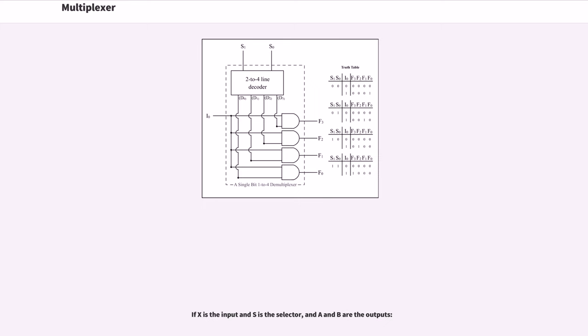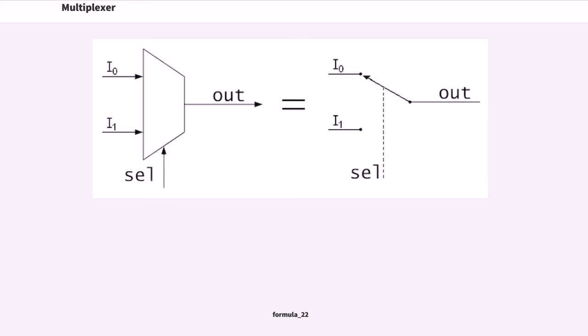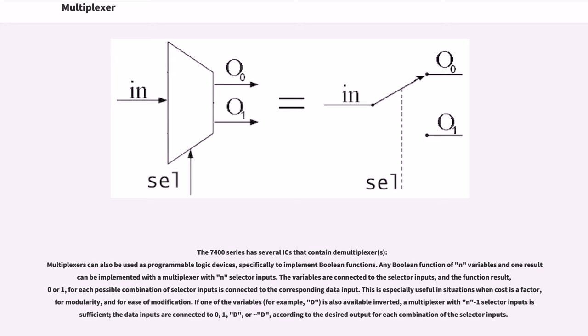If x is the input and s is the selector, and a and b are the outputs: Formula underscore 21, Formula underscore 22. The 7400 series has several ICs that contain demultiplexer.